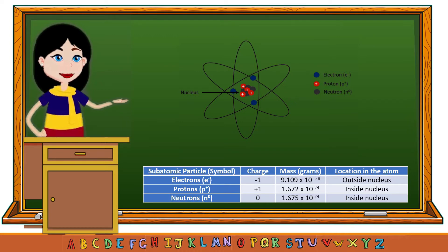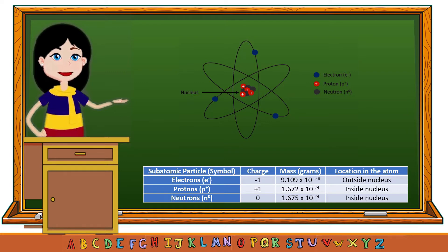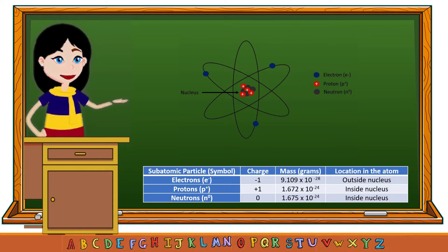Atoms contain particles with positive and negative charges. The symbol of protons is p⁺ and it carries a positive charge of positive one. Protons are located inside the nucleus.